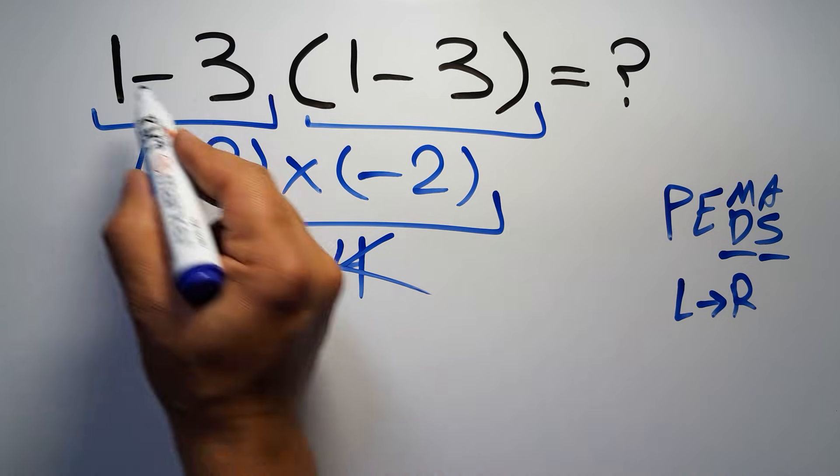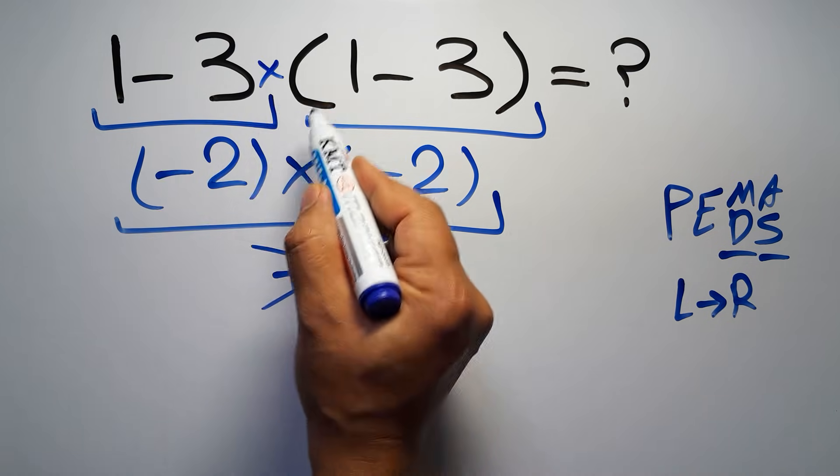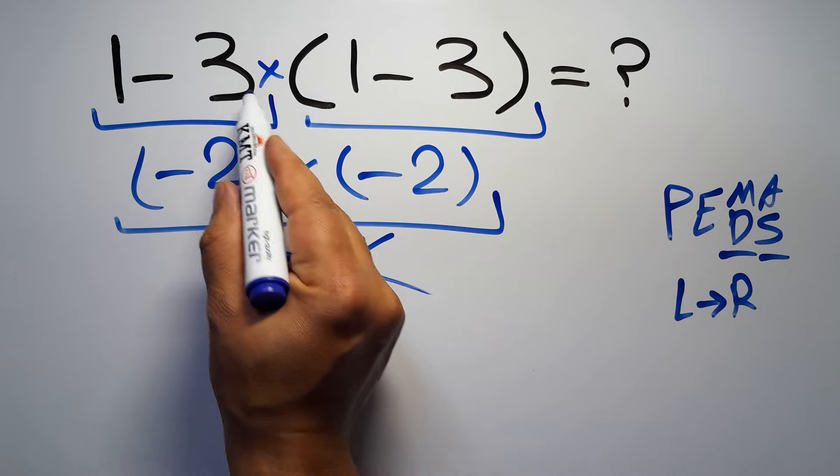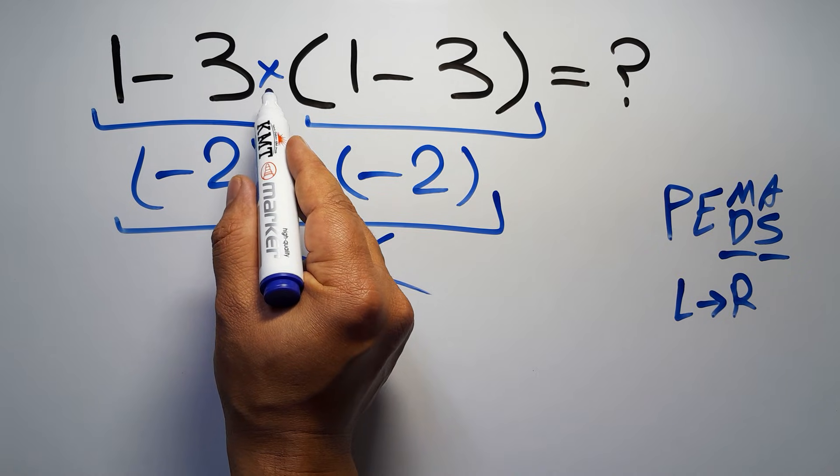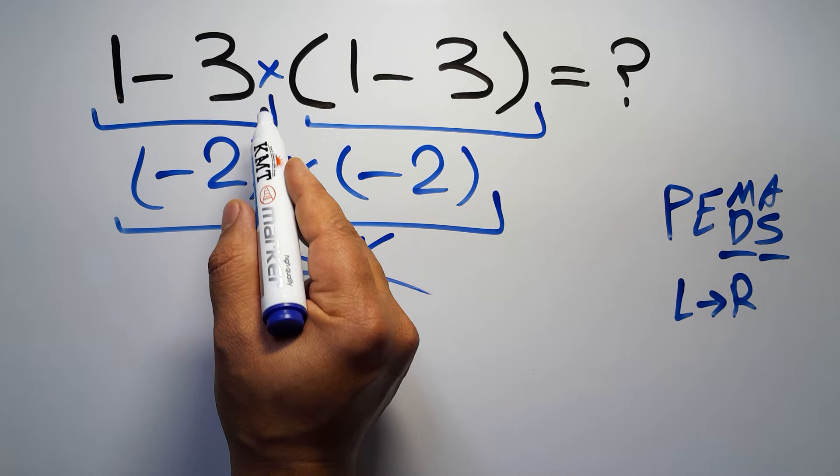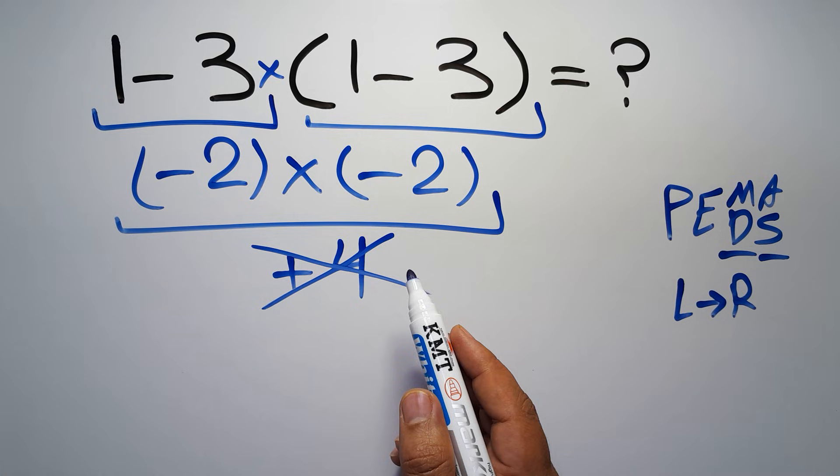In this expression we have 1 subtraction, 1 multiplication, and 1 parentheses. Inside this parentheses we have 1 subtraction. Here we have a multiplication because in mathematics when a number is placed next to parentheses it means multiplication, and we usually don't write the multiplication sign for brevity.